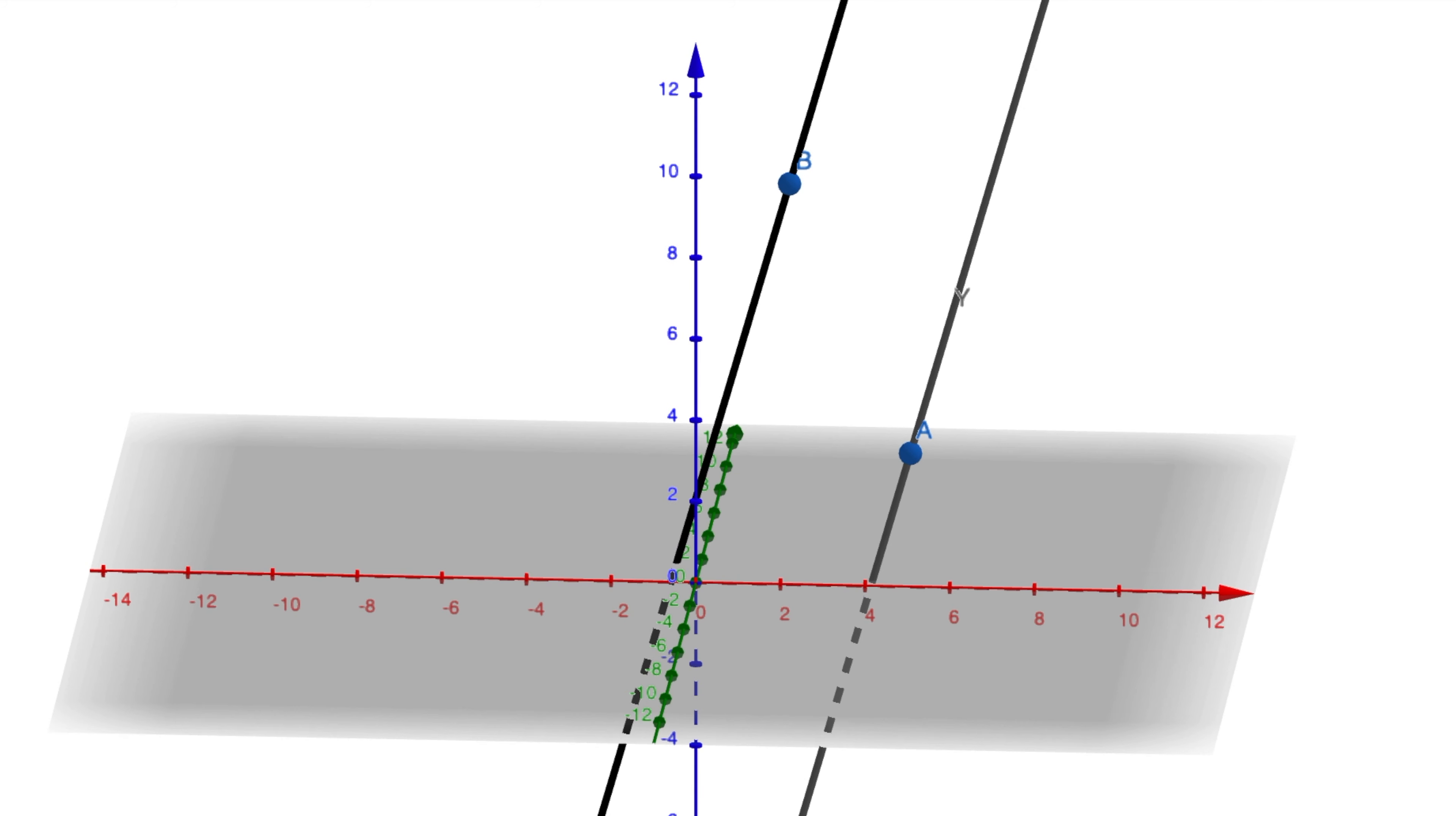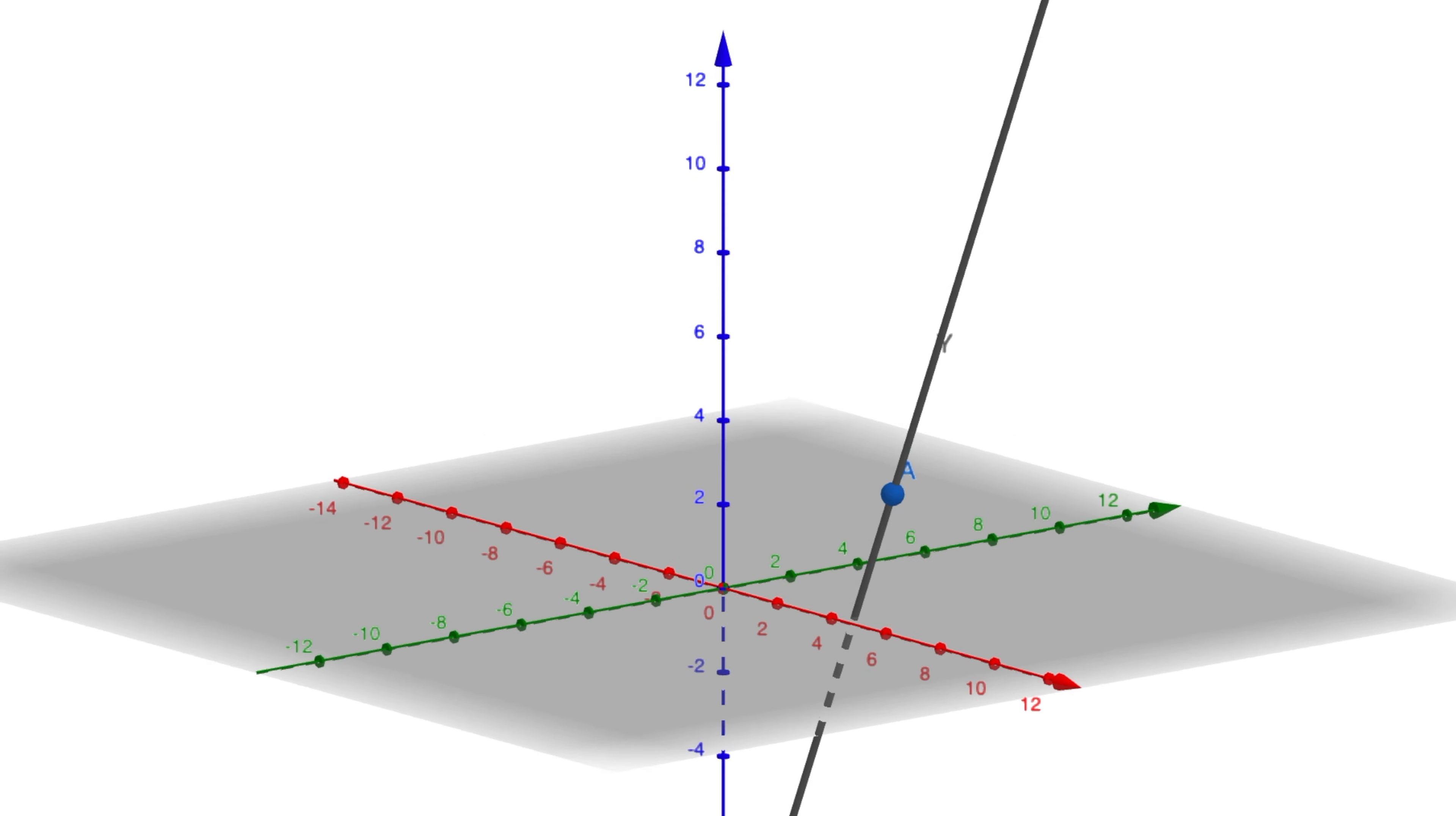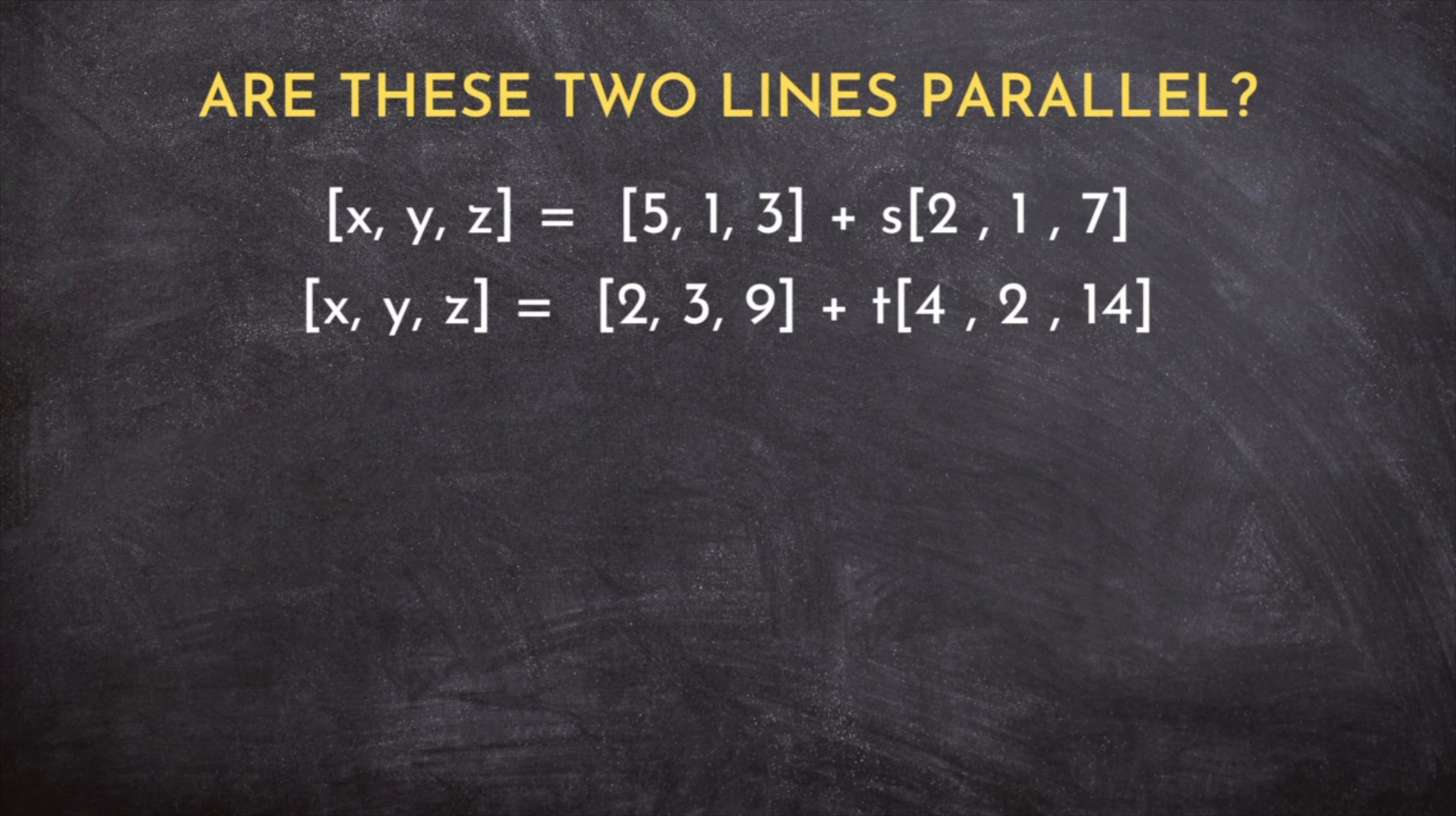If the point is not on the line, then the lines have to be parallel and distinct. But if the point is on the line, the lines have to be coincident. So let's pick one of these points and substitute it into the other equation.